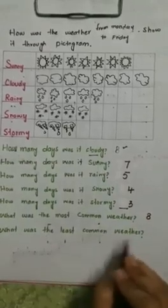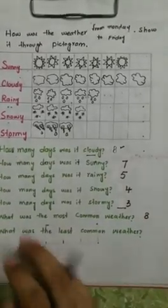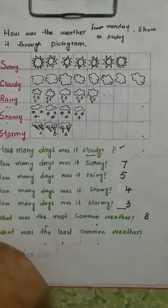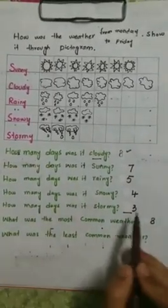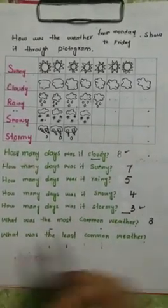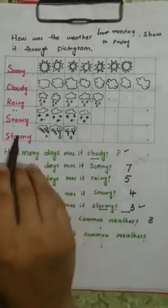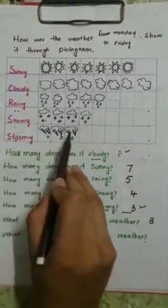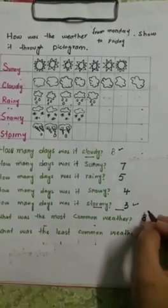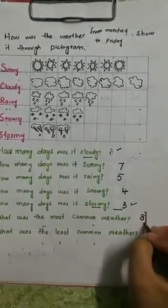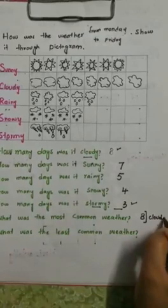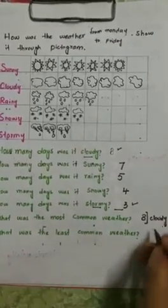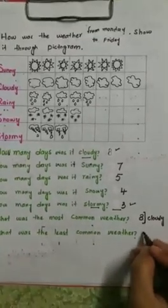Which is the least common weather? Least common means fewer — the most fewer. 3 — 3 is stormy. You can count it from here: 1, 2, 3. Yes. Most common weather was cloudy and the least common was stormy.